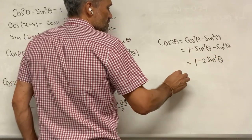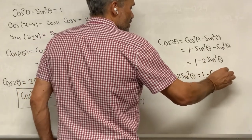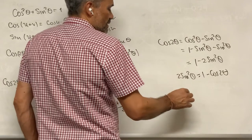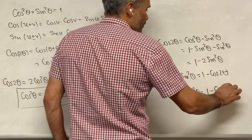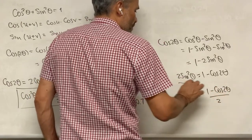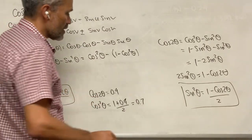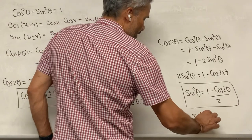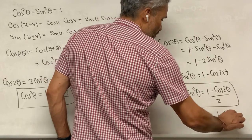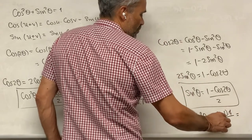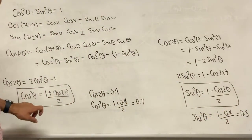And then we get that cosine of 2 theta is 1 minus 2 sine squared of theta. Solving for sine squared of theta, we get sine squared of theta is equal to 1 minus cosine of 2 theta over 2. In the same situation, if we know that cosine of 2 theta is 0.4, then sine squared of theta would be 1 minus 0.4 over 2, which is 0.6 divided by 2, equals 0.3.